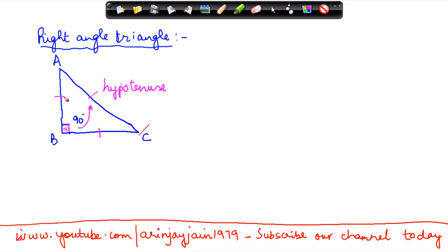The other two sides other than the hypotenuse are called the legs of the triangle.